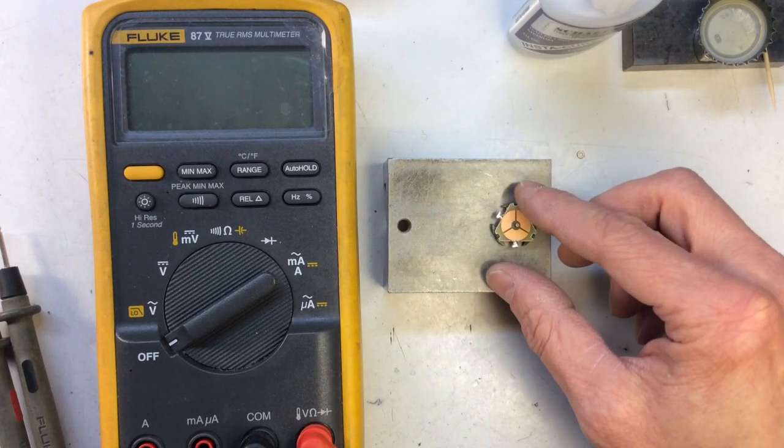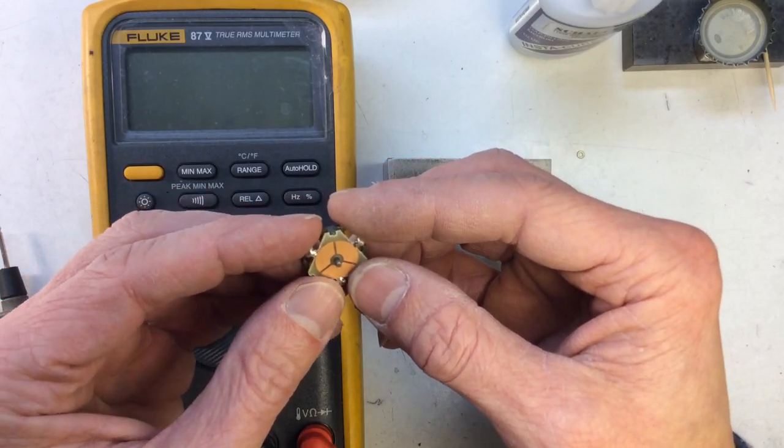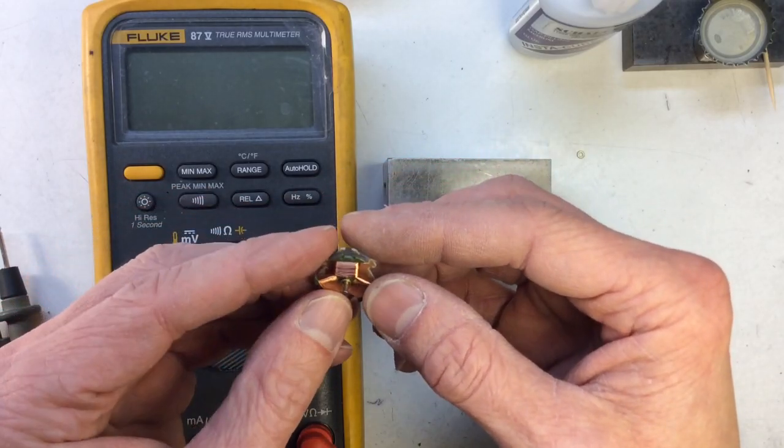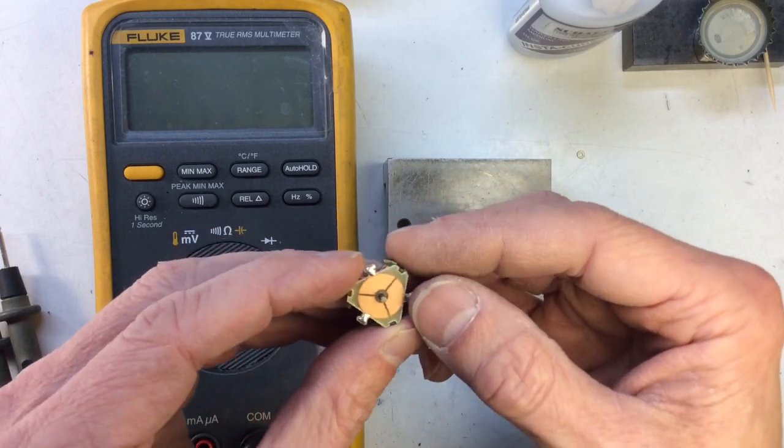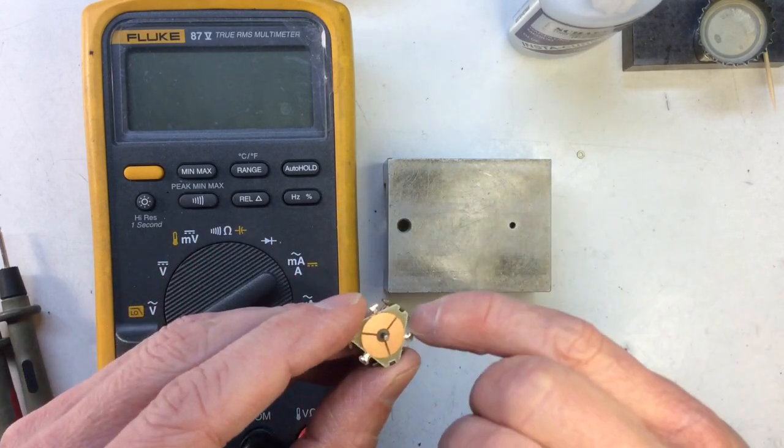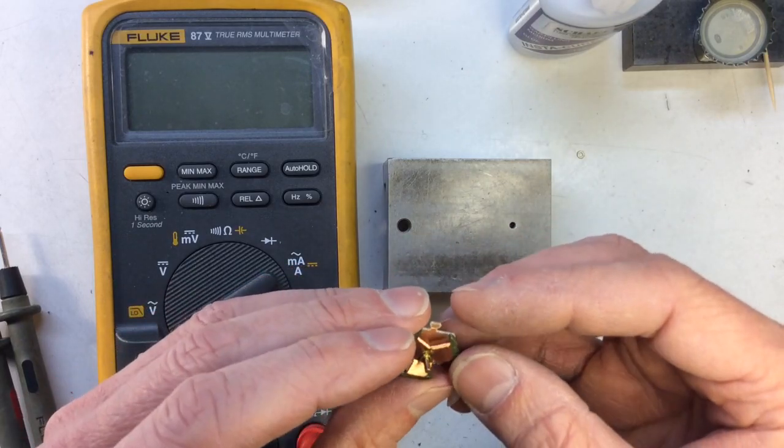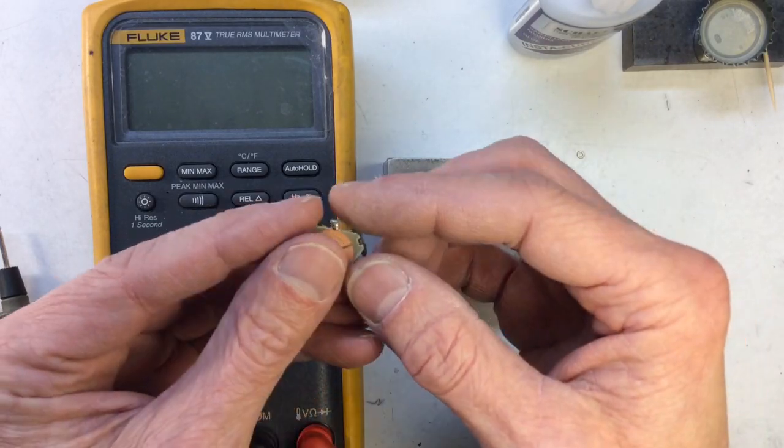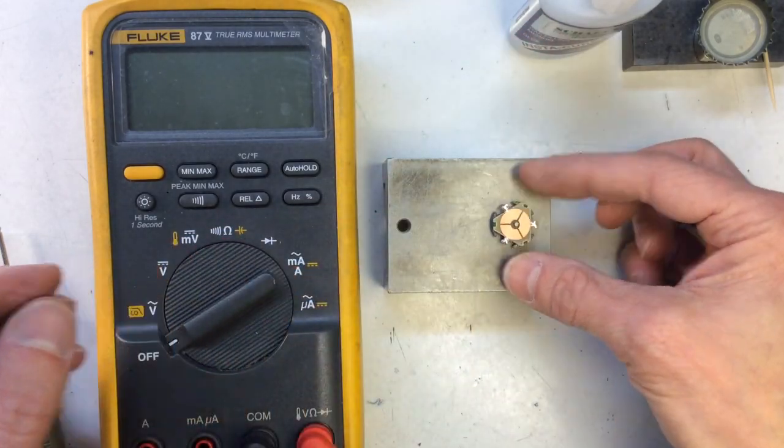The first thing we're going to do is just take a quick look at the arm. You're going to look at this thing and make sure there's nothing seriously wrong with it that would keep you from wanting to work it up. Make sure there's no nicks in the comm, bent shaft, look for obvious broken wires, anything like that. This armature looks good, so let's proceed.